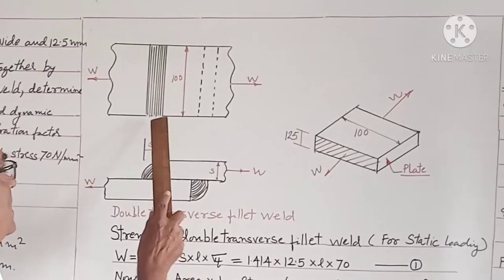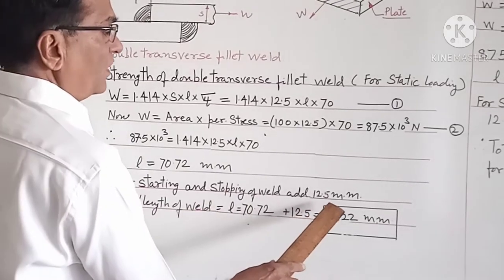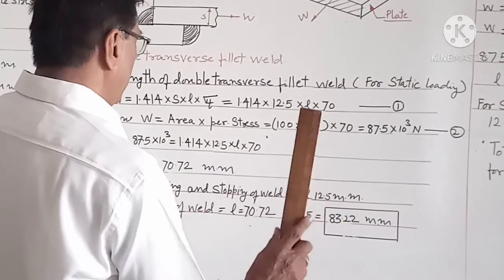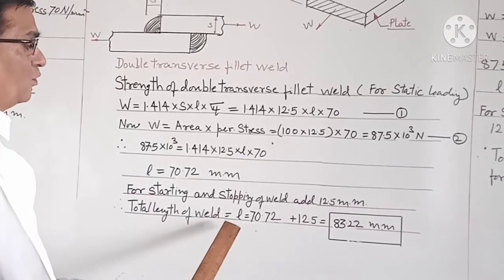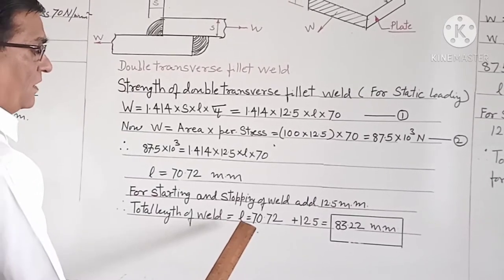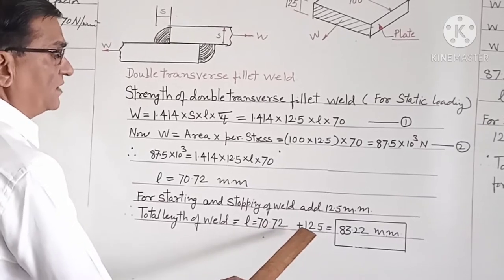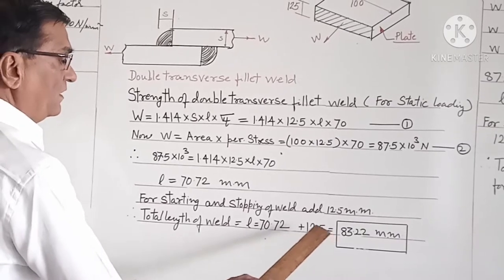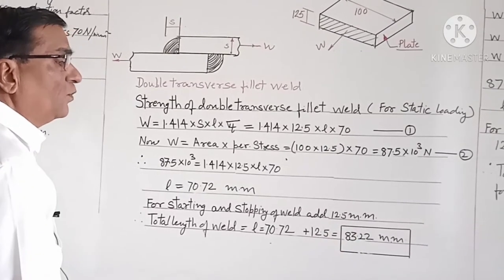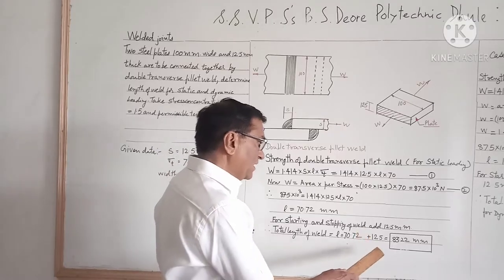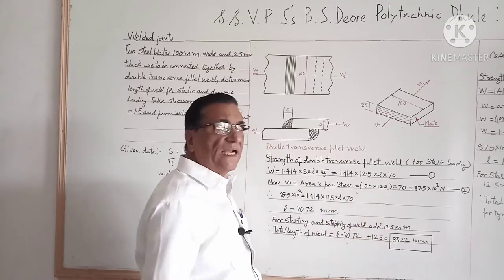For starting and stopping of the weld we add 12.5 mm. So the total length of the weld comes out to be L equal to 70.72 plus 12.5, that is 83.22 mm. This is the length of the weld for static loading.